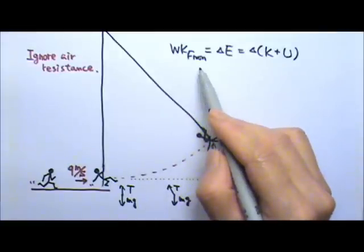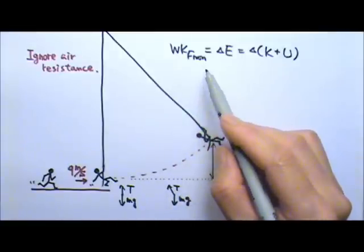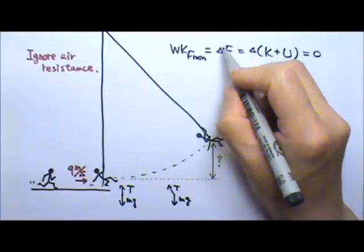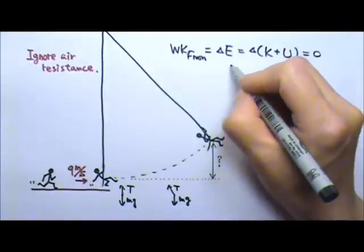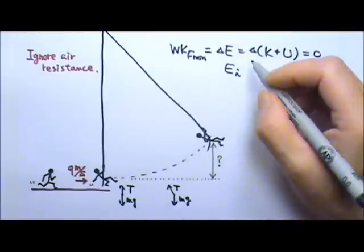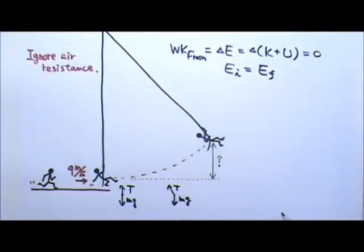The work done by the non-conservative forces in this case is zero. So if this is zero, that means the total mechanical energy does not change. So however much mechanical energy Tarzan has at the beginning, there is the same amount at the end.